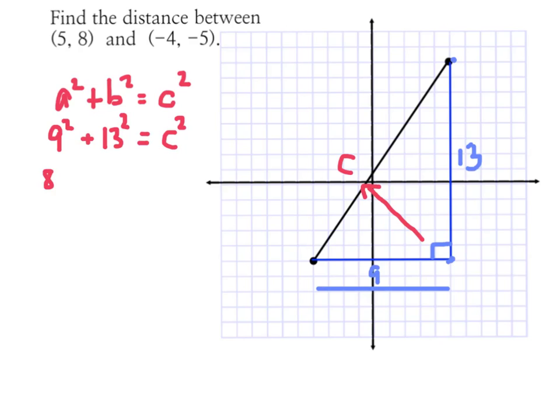Alright, 9² is 81, 13² is 169, and that will be equal to c². Once I add 81 + 169, I get 250 = c². Now remember that we need to find the square root of that, so I'm going to square root on both sides.